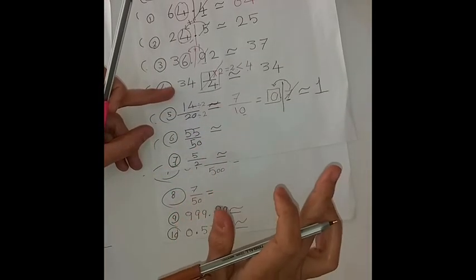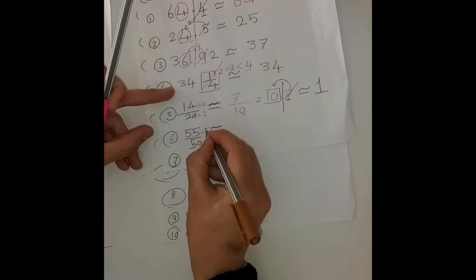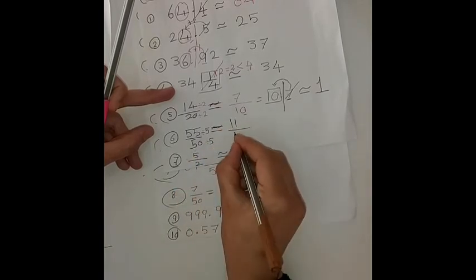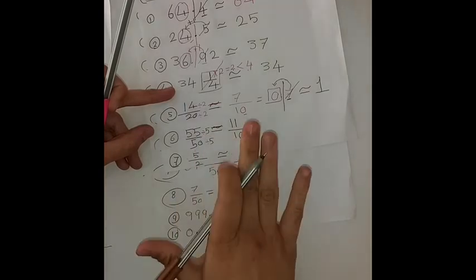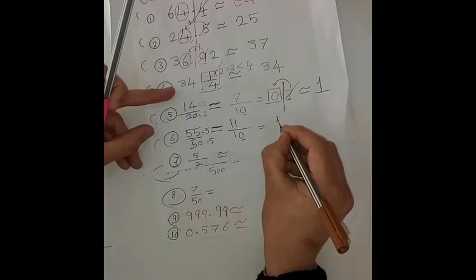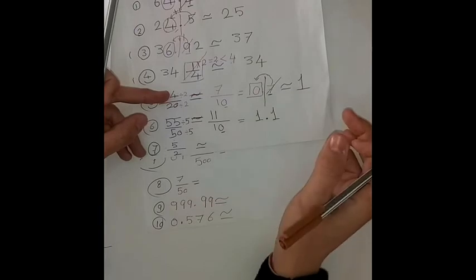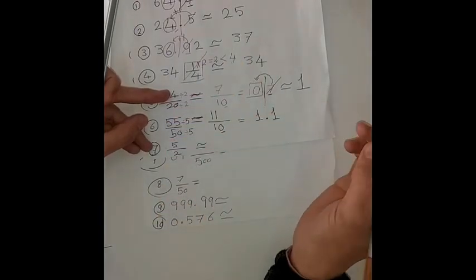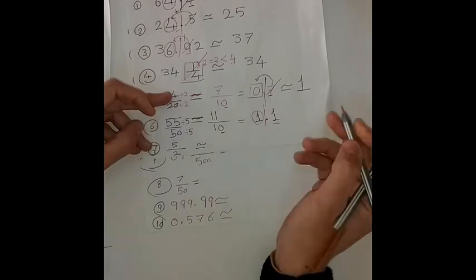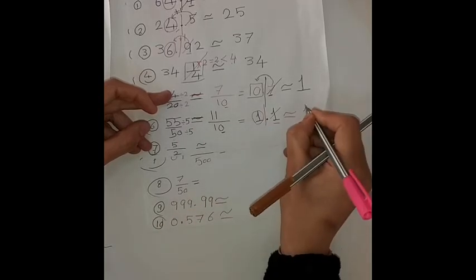Another example: 55 over 50. I simplify by dividing both by 5: 55 ÷ 5 = 11 and 50 ÷ 5 = 10. This gives the improper fraction 11 over 10. I convert it to decimal — since there is one zero, the decimal point goes after one digit — so it becomes 1.1. I circle the units place and look at its neighbor, which is 1. One is poor, so I cancel it and don't add anything. The result is approximately equal to 1.